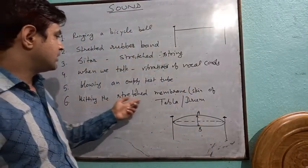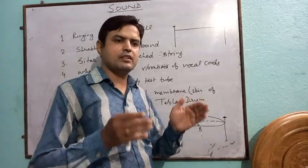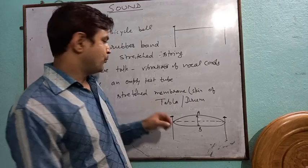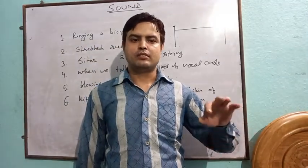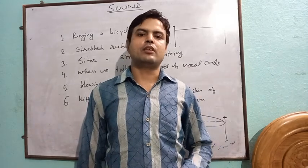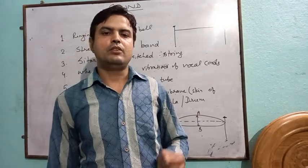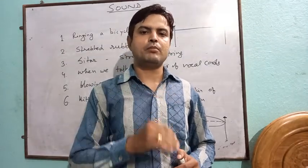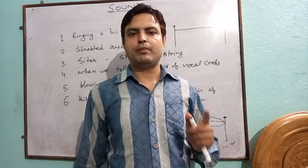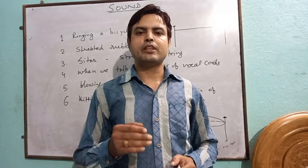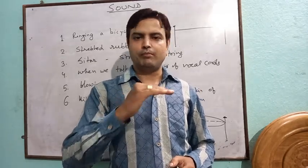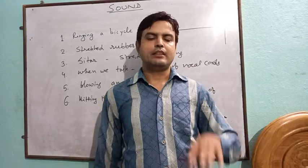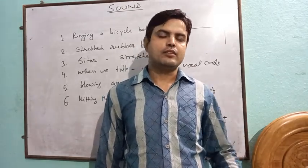Next example: beating the stretched membrane of a tabla or drum. The membrane is the screen of the tabla or drum. When we hit or beat the tabla, it produces sound. We cannot see its vibration, but to feel it, place any small, light object on the membrane and then beat it. We will observe that the object starts jumping up and down — this shows that when we beat the membrane, it starts vibrating and hence produces sound.